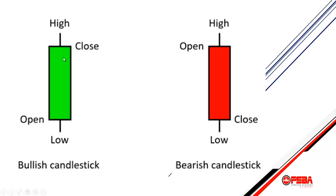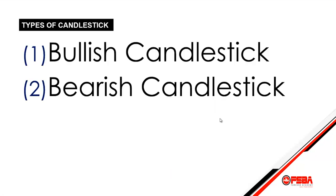In this picture we have two candlesticks — the green and the red. A candlestick looks like a normal candle with a body and a wick. In the forex market we call this the wick and this the body. This particular candle is a bullish candlestick and this one is a bearish candlestick. A bullish candle is always green while a bearish is always red. Bullish means the market opens low and closes high, while bearish means it opens above and closes below.